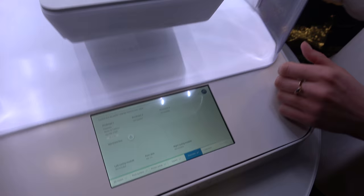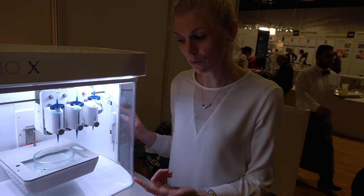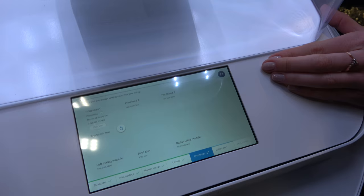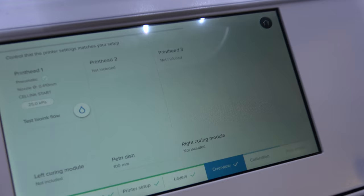The next step is the overview. And here you can see what kind of settings you've entered and also be able to test the flow of the bioink. So if you're printing with a new material, for example, it's possible to see that you have the right pressure for the print.